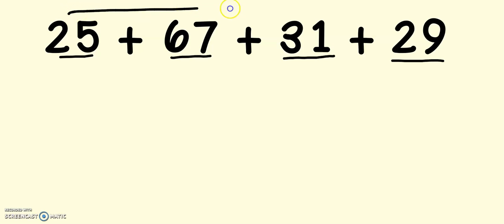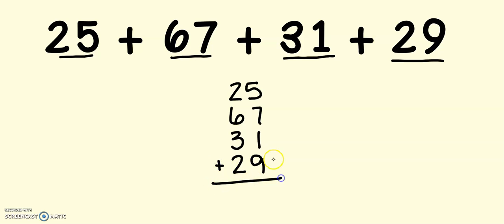Right now, they are horizontal. And I want to put them vertically because it just makes my life a little bit easier to add. So let's put all the numbers down. 25, 67, 31, 29. And just like before, I only need one plus sign right here at the bottom, right above my answer line.